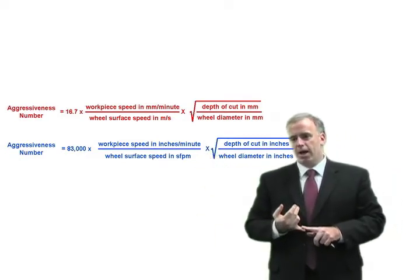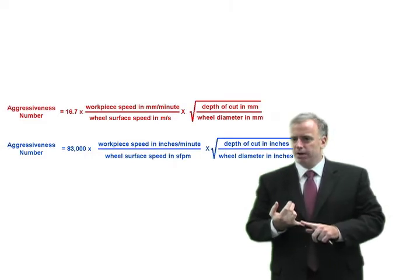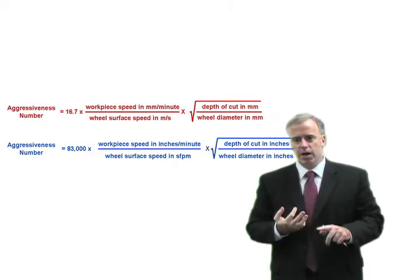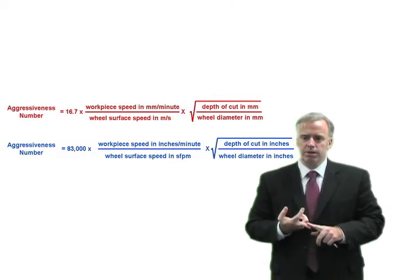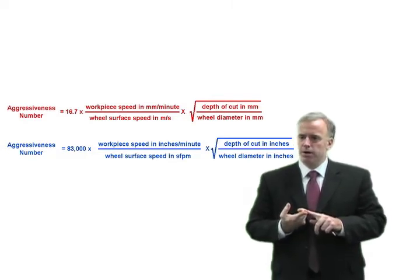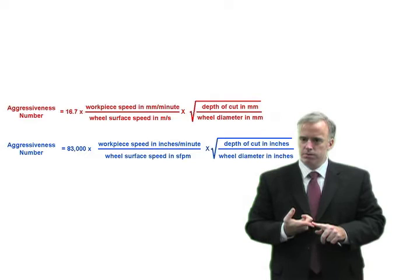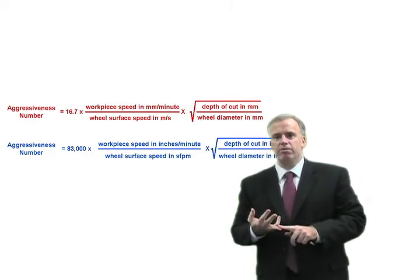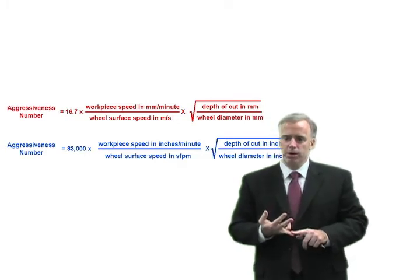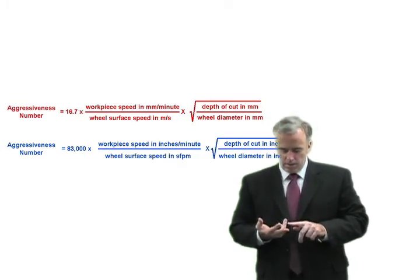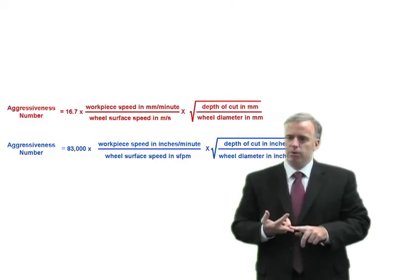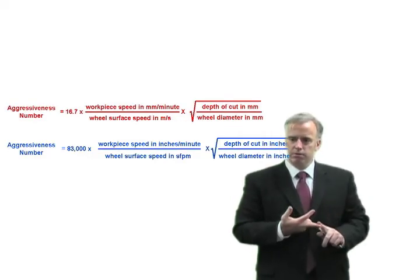Every grinding wheel is going to have an aggressiveness number that it likes. It completely depends on the grinding wheel, the coolant type, the workpiece material. I can't tell you what aggressiveness number to use. Typical aggressiveness numbers are somewhere between, say, 5 and 50, depending on the wheel. But once you find that aggressiveness number that works, you'll find that it works for all situations for that wheel.